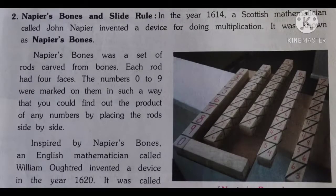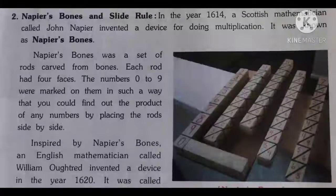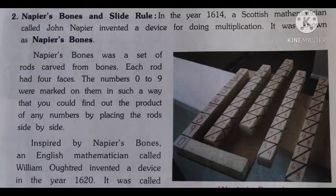Napier's Bones was a set of rods carved from bones. Each rod had four faces. The numbers 0 to 9 were marked on them in such a way that you could find out the product of any numbers by placing the rods side by side.